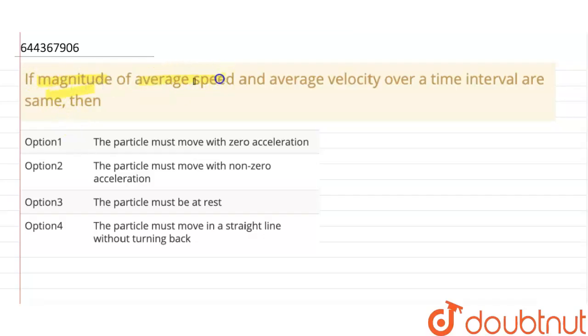If the magnitude of average speed and average velocity over a time interval are the same, then...